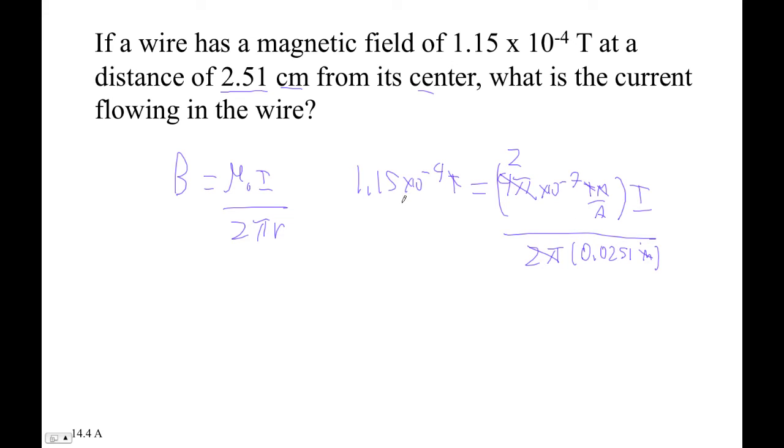So I'm going to go 1.15 e minus 4 times 0.0251 divided by 2 e minus 7, and I get 14.4 amps, the current.